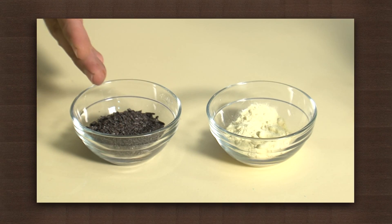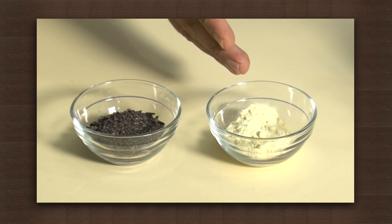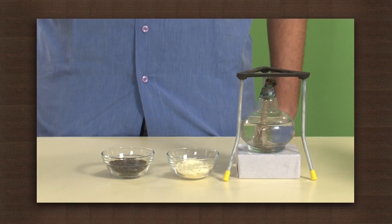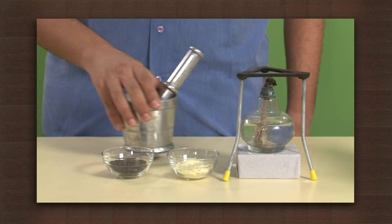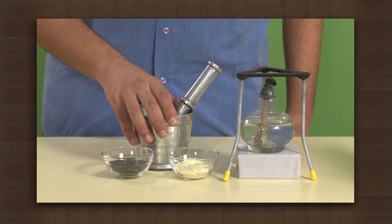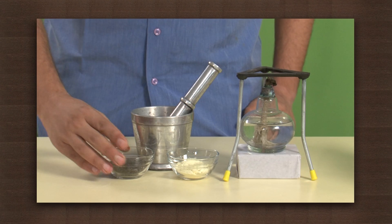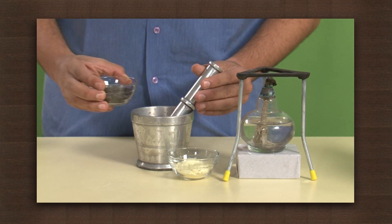We need iron filings and sulphur powder. Take about 5 parts of iron filings and 3 parts of sulphur powder by weight, and use a pestle to crush the two together.